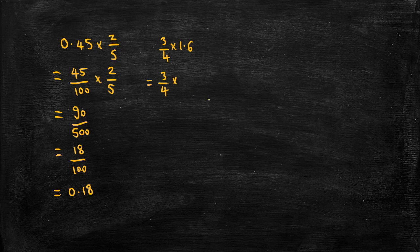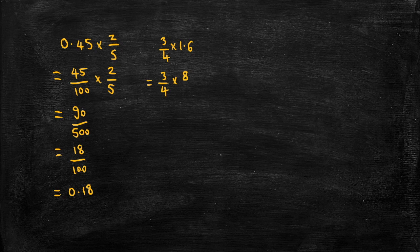So we could write down 16 over 10, but there's a common factor of 2 in 16 and 10, and so let's express that as 8 over 5 to make things a little simpler.